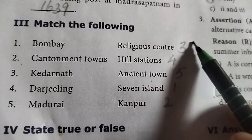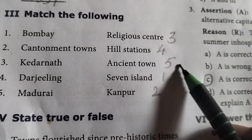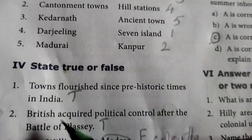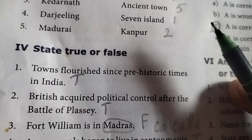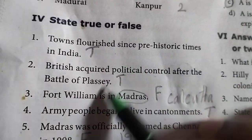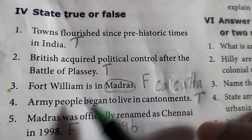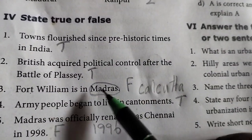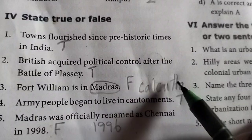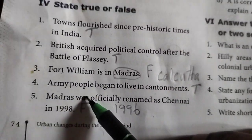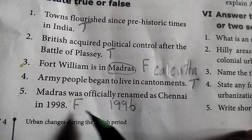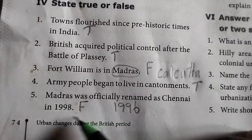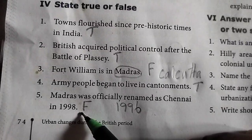Match the following: 3, 4, 5, 1, 2. State true or false. First one is true. Second one is true. Third one is false — Madras, Surat, Goa, Bombay. Fourth one is true. Fifth one is false. And 1998.